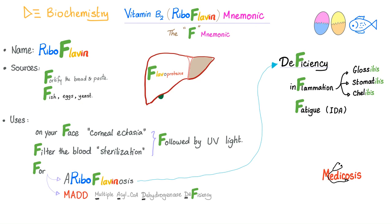eggs, yeast, mushroom, etc. What are the uses? You can put it on the eye if you have corneal laceration, or you can use it to filter the blood — by filter, I mean sterilization. Both of these are followed by UV light.